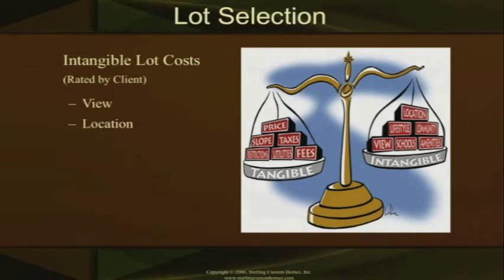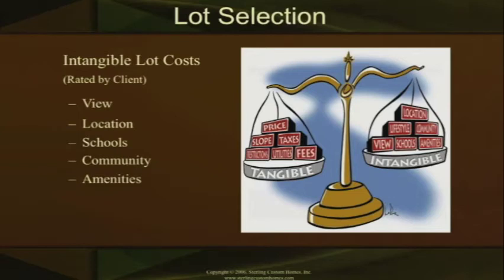The location — I want to be there because of that location relative to the city and to work. The schools — maybe they have kids and those schools are in a certain school district, so that's important to them. Their community, the amenities of a golf course, a clubhouse, things that are important to them, and the lifestyle. All of these items we talked about are really, truly their lifestyle — what are they going to be happy with, what do they really want in a lot selection?